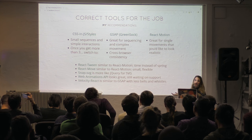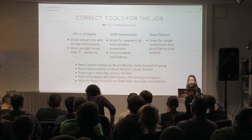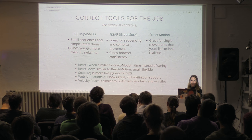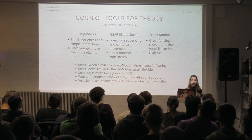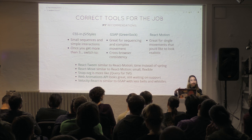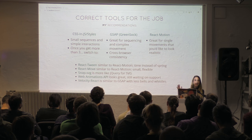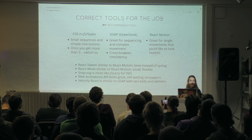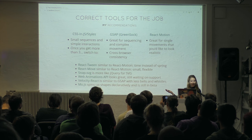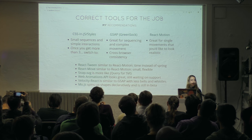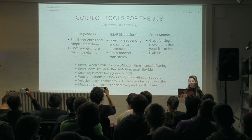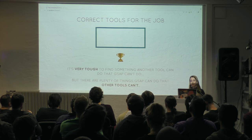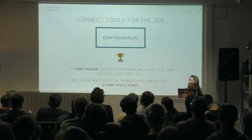Velocity React is similar to GSAP without a lot of the bells and whistles. I ran some tests a few years back showing performance was a little lacking, but those were two years old — and web years are like dog years, so that's like 14 years ago now. There's been a lot of work on that library since. Mo.js, as you saw, spins up shapes declaratively and it's still in beta but I really love it — it's worth playing around with. One library that again and again shines when I want to create beautiful movement in React is GreenSock. It's been under development for 10 years and it's very tough to find something another tool can do that GSAP can't, but there are plenty of things GSAP can do that other tools can't.